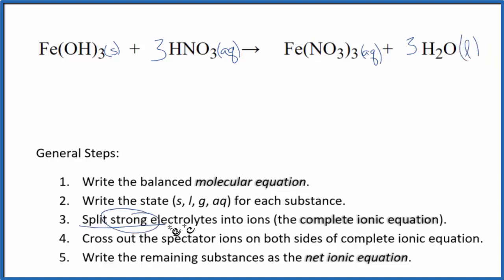Now we can split the strong electrolytes into their ions, and that will give us the complete ionic equation. This is a solid, it's not a strong electrolyte, so we're just going to write Fe(OH)₃. We're not going to split it apart. I'll write the states at the end.